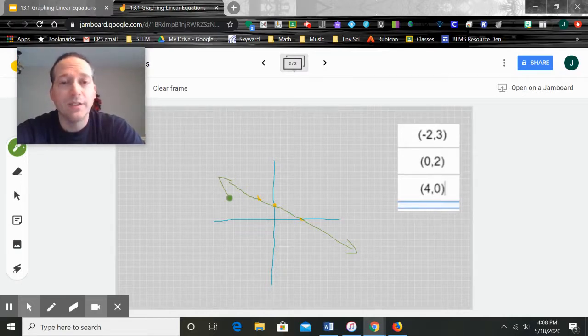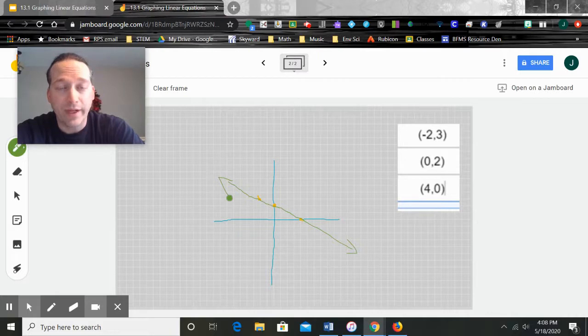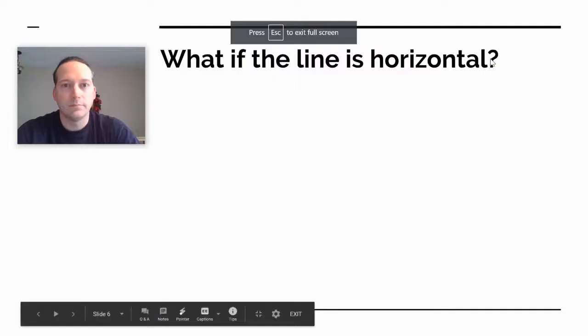So all we did was picked three points, solved them for, you picked three x variables, three x, sorry, three values for x. A negative, zero, and a positive. Solved for y, plotted the points, and then we drew our straight line.